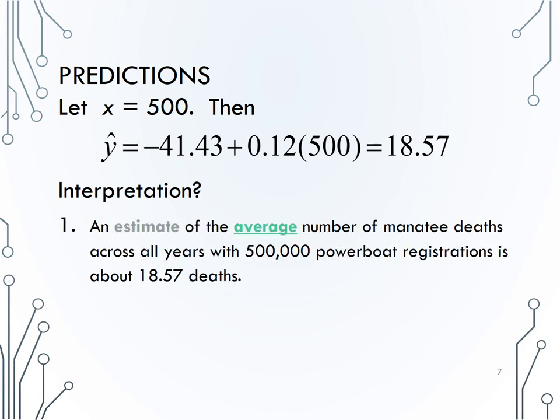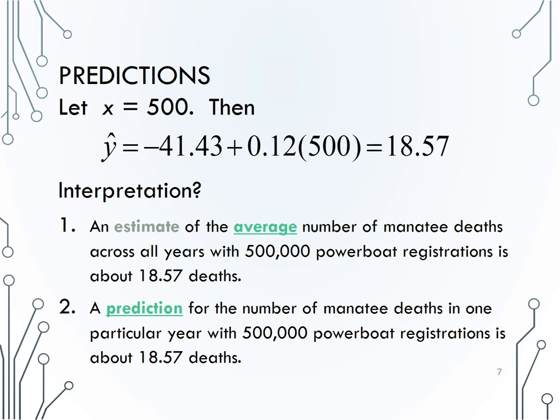We would say an estimate of the average number of manatee deaths across all years with 500,000 powerboat registrations is about 18.57 deaths. Another way of interpreting that is a prediction for the number of manatee deaths in one particular year with 500,000 powerboat registrations is 18.57 deaths.